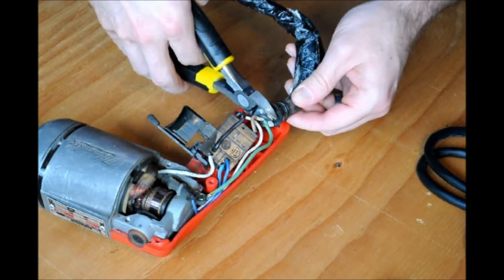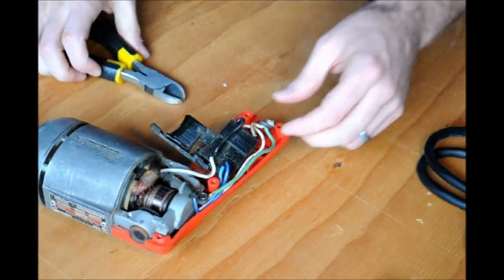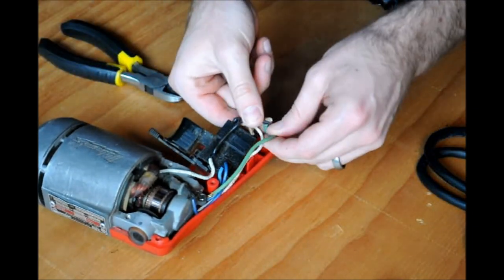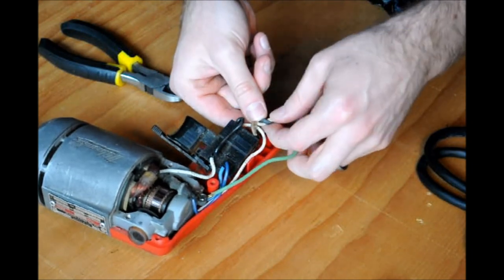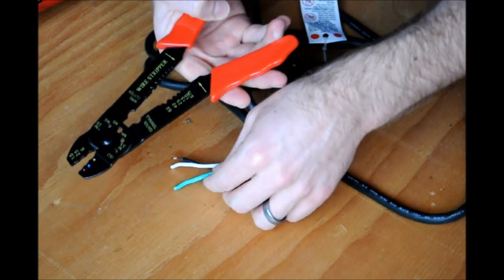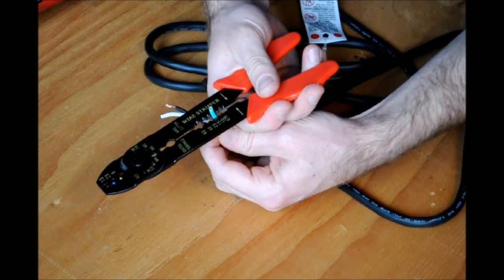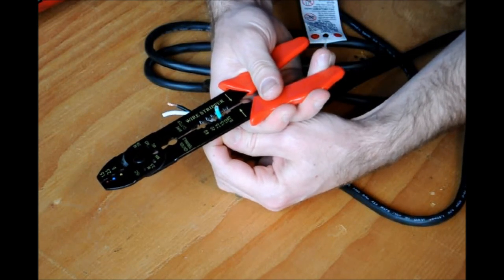Next, cut the old cord off the drill. You'll need to strip off some of the wire insulation to make a place for soldering.